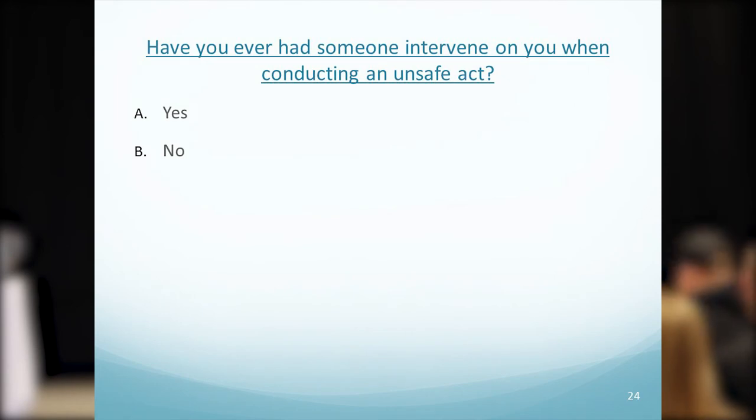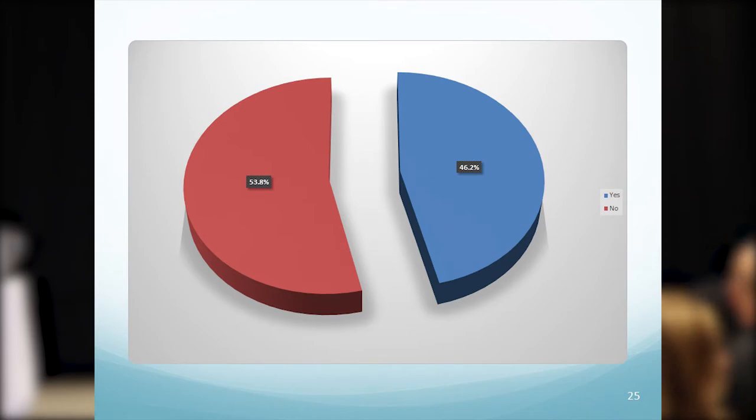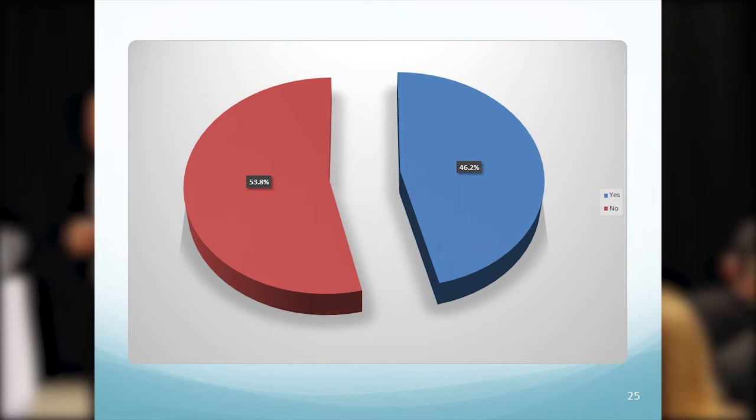Have you ever had someone intervene on you when you were conducting an unsafe act? 54% said no — they got away with it. How did you feel about getting away with it, when you knew you were doing something unsafe and somebody saw you but didn't intervene? Were you just lucky you didn't get caught, or did you think, 'I better be careful next time because I don't want to be seen not leading by example'?